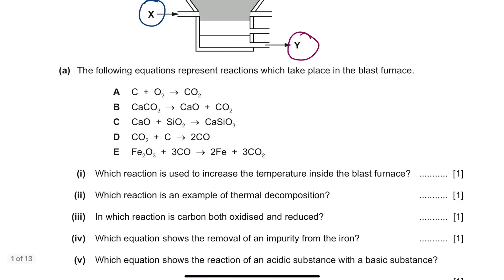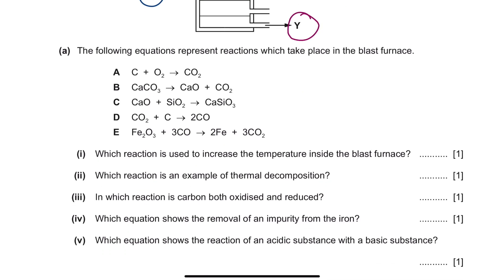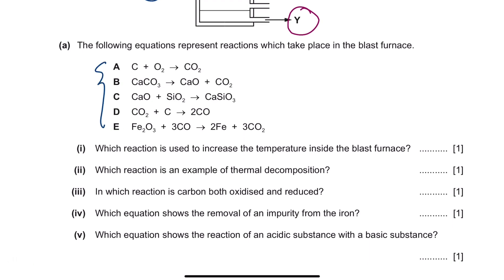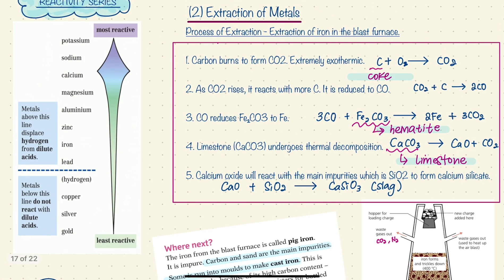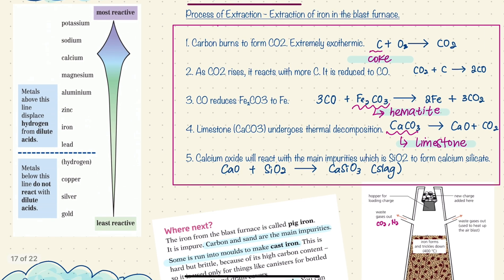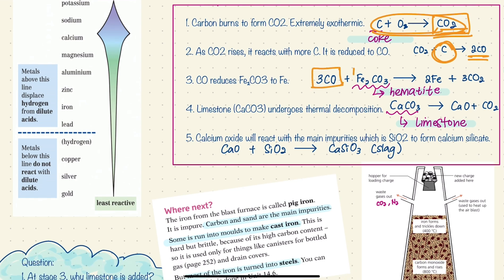Question A states that the following equations represent reactions which take place in the blast furnace. There are five reactions happening. The first is carbon being oxidized into carbon dioxide. Next, the carbon dioxide produced rises to the top of the blast furnace and reacts with more carbon — a raw material — and is reduced to carbon monoxide. Your carbon monoxide then reacts with hematite, the ore.